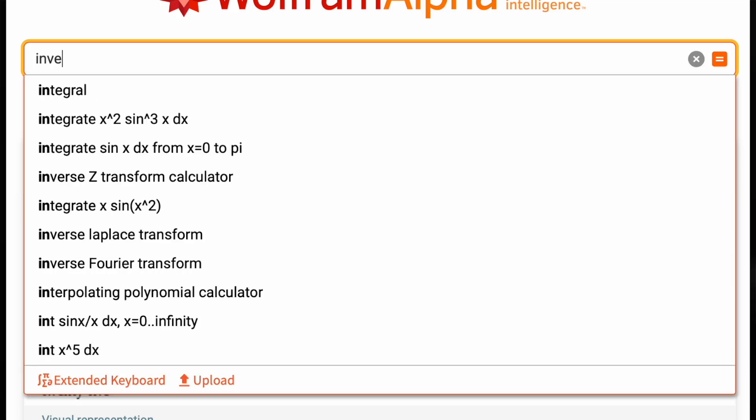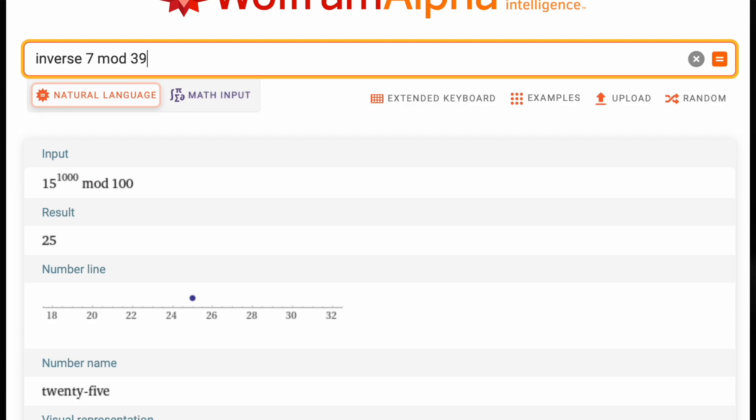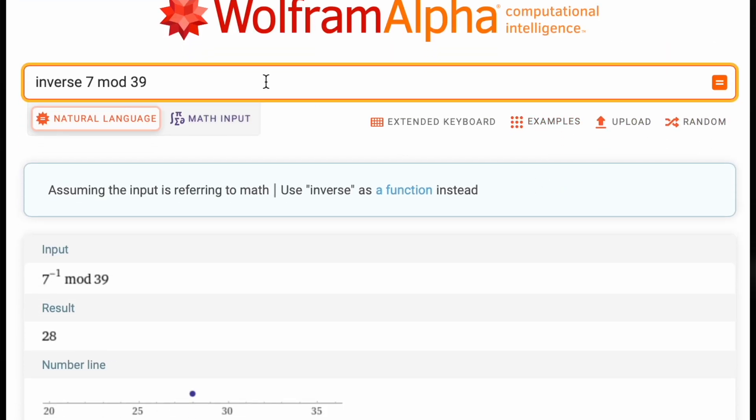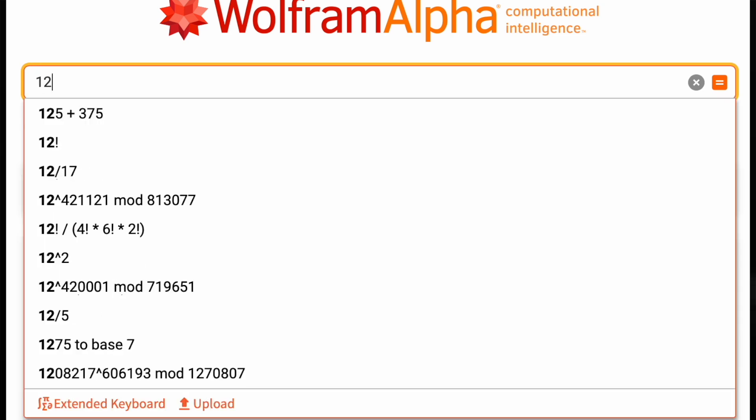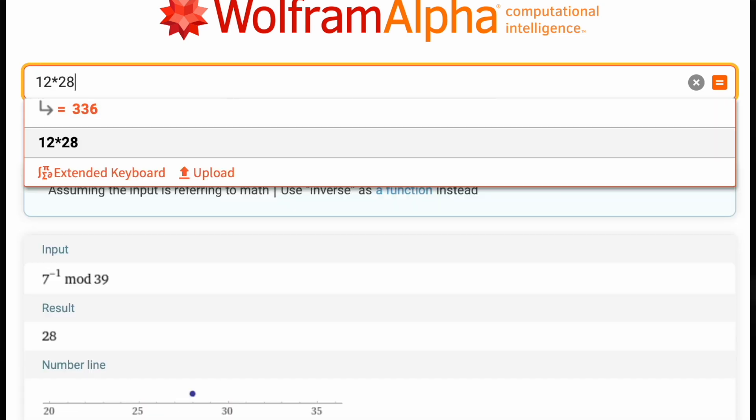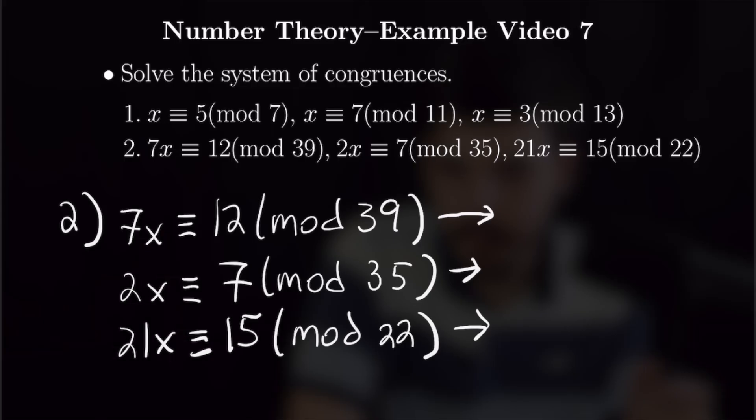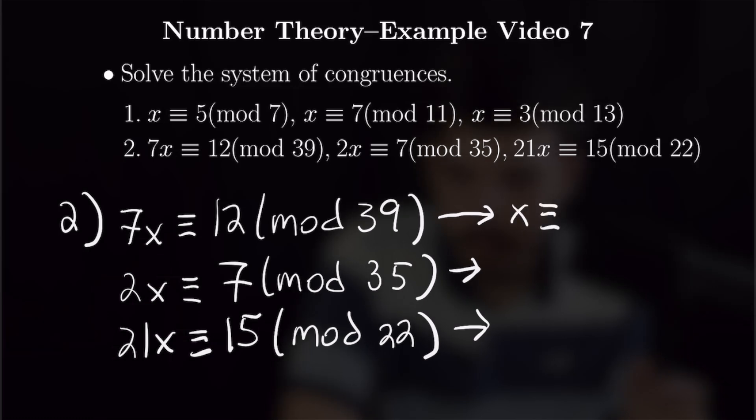For the first one, we're going to want to first calculate the inverse of 7 mod 39, and plugging that in we get 28. So we have to apply that to both sides of the equation. If we multiply it on the left, we will get 1x, and to see what we'll get when we multiply it on the right side, we will multiply 12 times 28, and then reduce mod 39. Plugging that into Wolfram Alpha, we can see that is 24. So we can rewrite our congruence as x congruent to 24 mod 39.